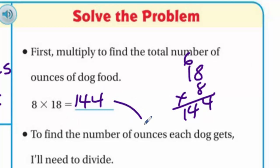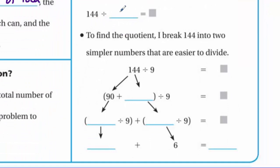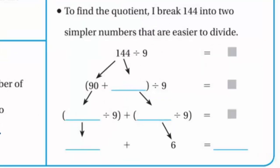Now to find the number of ounces each dog gets, I need to divide. I'll take 144 and divide that by nine. To find the quotient, I break 144 into two simpler numbers that are easier to divide. They're taking 144 and saying 144 is the same as 90 plus something — I need to figure out what to add to 90 to get 144, and that's 54. So I have 90 plus 54, which equals 144, divided by 9.